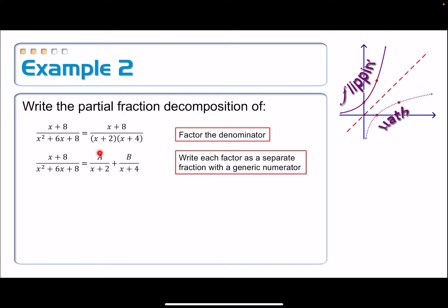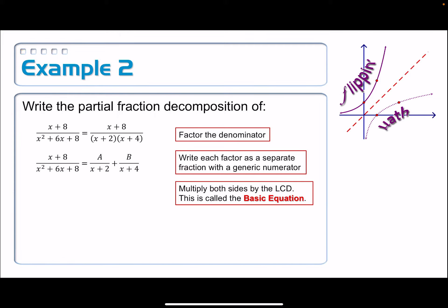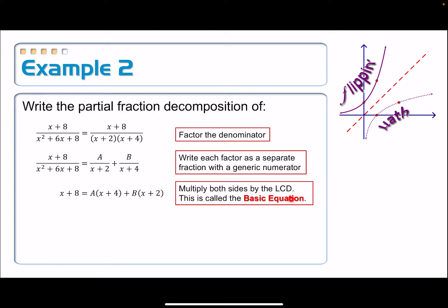What we want to do is solve for A and B. To solve a rational equation, we want to get rid of all the fractions by multiplying by the least common denominator, which is x squared plus 6x plus 8 — that's exactly what we get if we multiply those two denominators on the right side. The x plus 2 from the A term will cancel, leaving a factor of x plus 4, and the x plus 4 in the second fraction cancels, leaving a factor of x plus 2. This resulting equation is called the basic equation, and we're going to solve it for A and B.